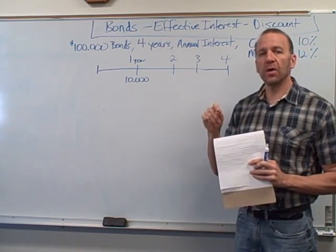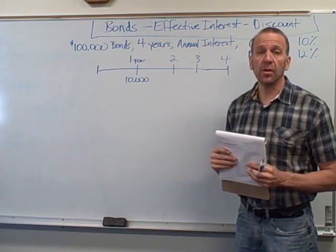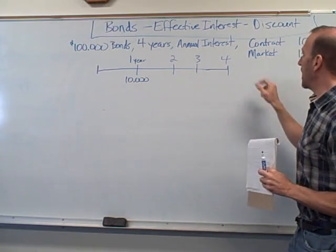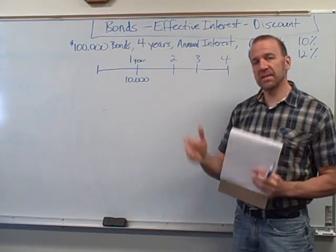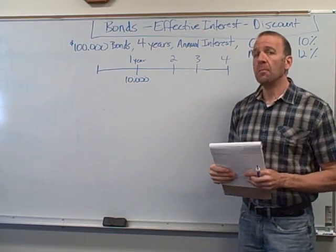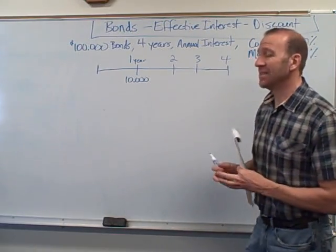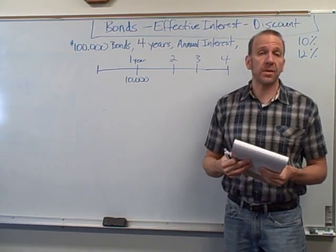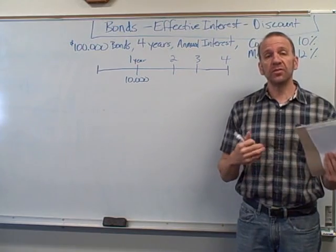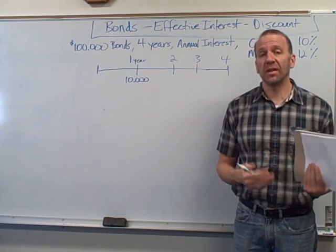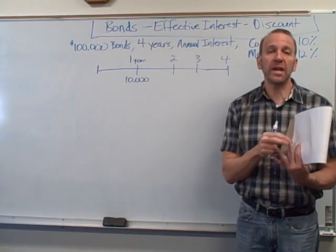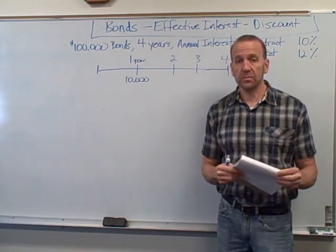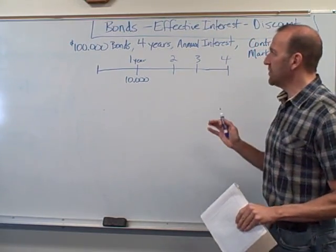Because the contract interest rate is lower than the actual market rate right now, this bond is going to sell at a discount. I call it the contract rate because that's what my textbook uses, but other textbooks use terms like the stated rate, coupon rate, or nominal rate. If your textbook uses any of those terms, they are all the same as the contract rate.